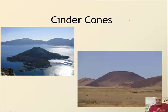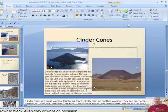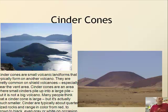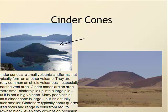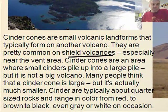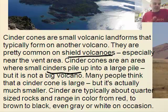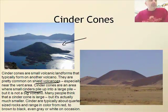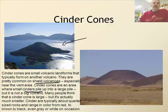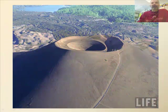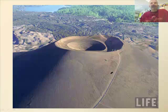Now let's talk about cinder cone volcanoes. A cinder cone is a small volcanic landform that typically forms on another volcano. Here's a classic example inside Crater Lake. They're common on shield volcanoes, especially near the vent area — small cinders pile up there. Many people think a cinder cone is large, but it's actually not. The cinders are typically quarter-sized rocks ranging in color from red to brown to black and gray.